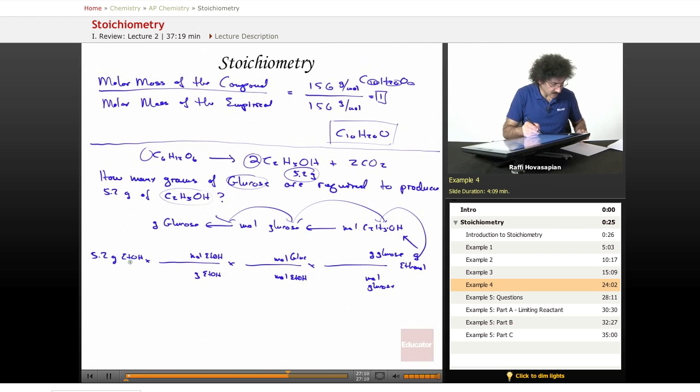5.2 grams of ethanol. Ethanol happens to be 46 grams per mole. The mole ratio, how many moles of ethanol to moles of glucose? Moles of ethanol? Two. Moles of glucose? One. That's why you need a balanced equation. Glucose is 180 grams per mole.